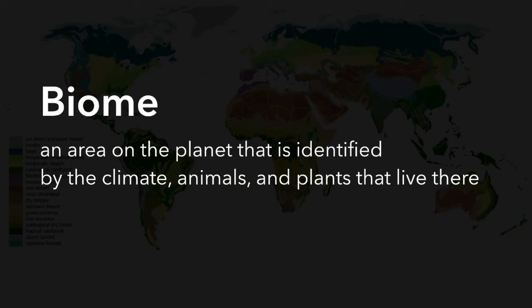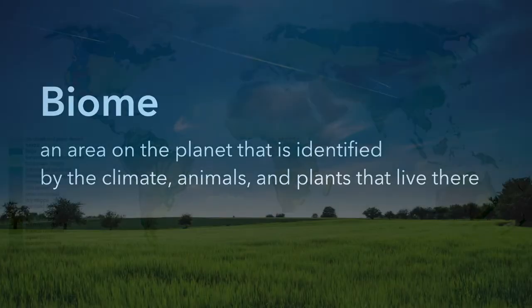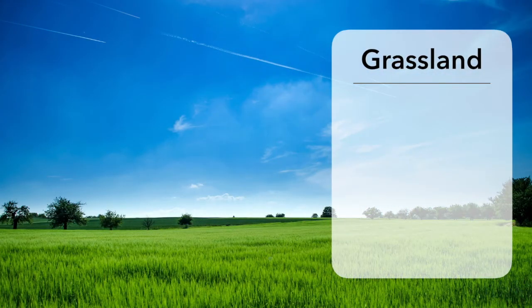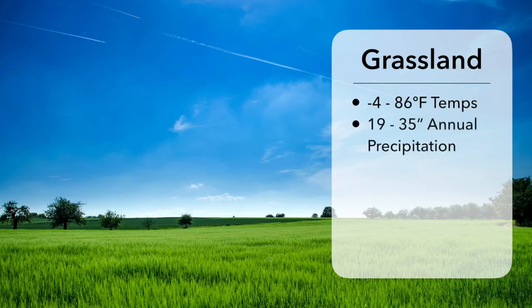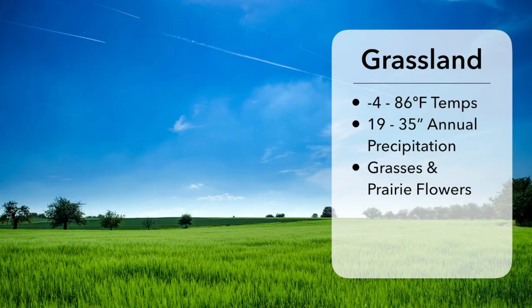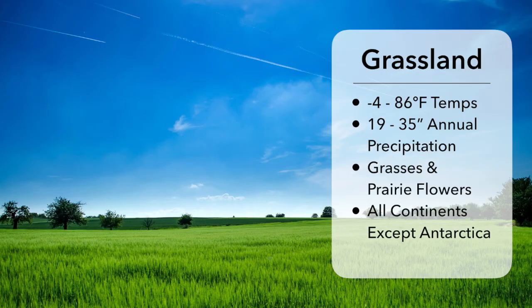While there are eight biomes within this lesson, we are going to focus on one in particular: the grasslands. The way you know if you're in a grassland biome has to do with the temperature, which ranges from negative 4 to 86 degrees on average. They have between 19 and 35 inches of annual precipitation or rainfall. And while you won't find many trees, there are many different types of grasses and prairie flowers. Grasslands can be found on every continent except Antarctica.